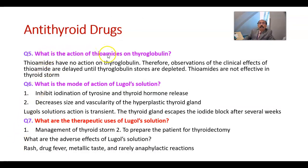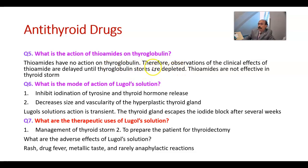What are the actions of thioamides on thyroglobulin? Thioamides have no action on thyroglobulin. Therefore, the clinical effects of thioamides are delayed until thyroglobulin stores are depleted, which takes several weeks. Thioamides are not effective in thyroid storm, as thyroid storm is a life-threatening condition requiring medication that works very quickly.